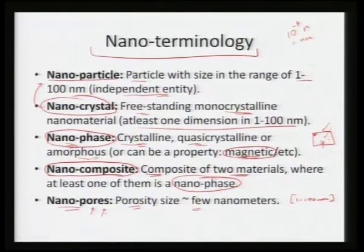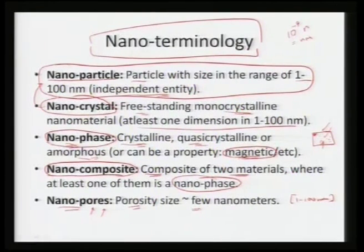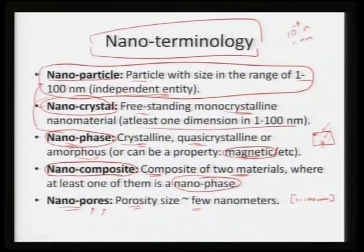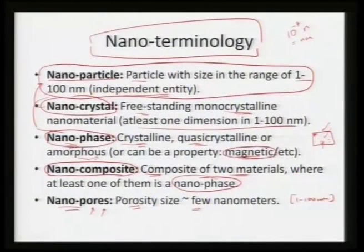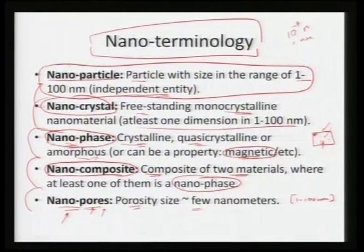Nanopores can be related to structural colors, such as those arising in peacock feathers. So nano terminology can exist as a nanoparticle — an independent entity with a size range of 1 to 100 nanometers — as a nanocrystal with a free-standing monocrystalline material with at least one dimension in the 1 to 100 nanometer scale, as a nanophase which is a structure or property at nano scale, as a nanocomposite, or as nanopores with size within 1 to 100 nanometers.